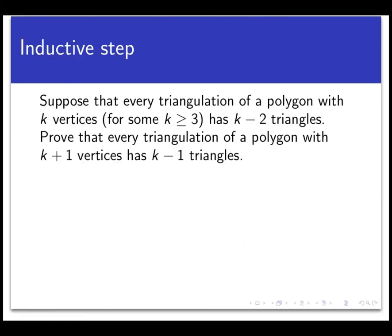Now let's move on to the inductive step, and this is where it gets fun. For the inductive hypothesis, assume that every triangulation of a polygon with k vertices has k minus 2 triangles in it, and then we're going to prove that every triangulation of a polygon with k plus 1 vertices has k plus 1 minus 2, which is k minus 1 triangles in it.